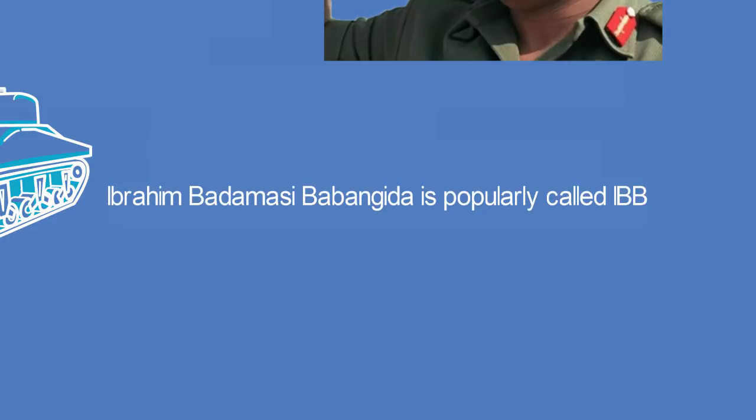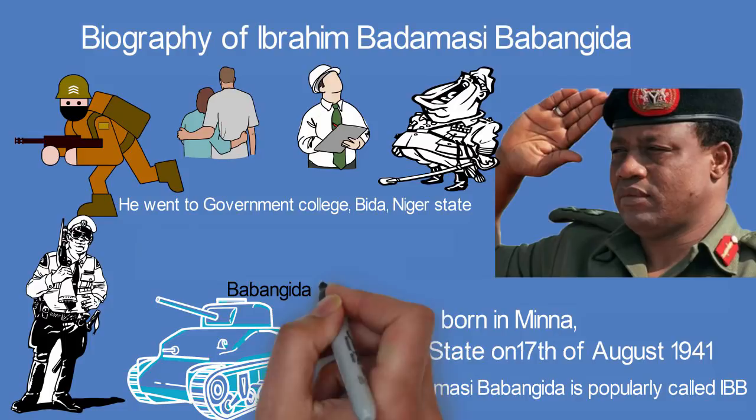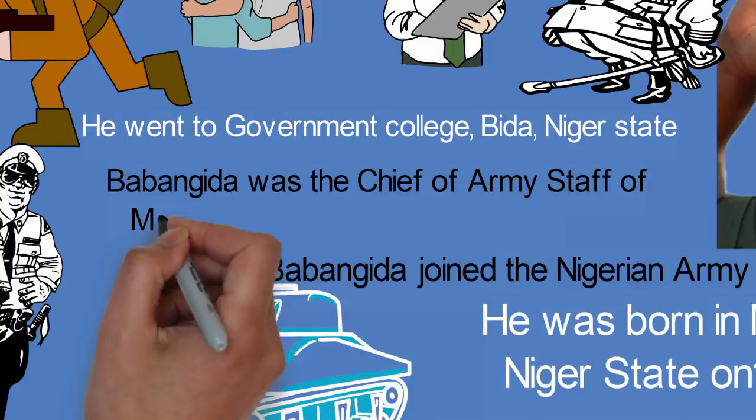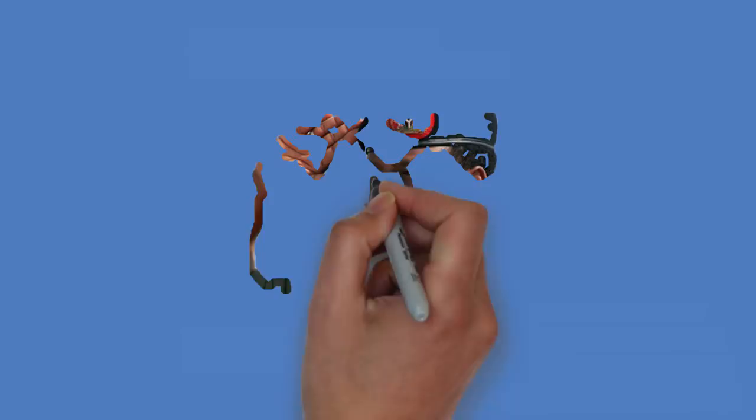Babangida attained the following ranks in the Nigerian Military: Second Lieutenant 1963, Lieutenant 1966, Captain 1968, Major 1970, Lieutenant Colonel 1970, Colonel 1973, Brigadier 1979, Major General 1983, and General 1987.